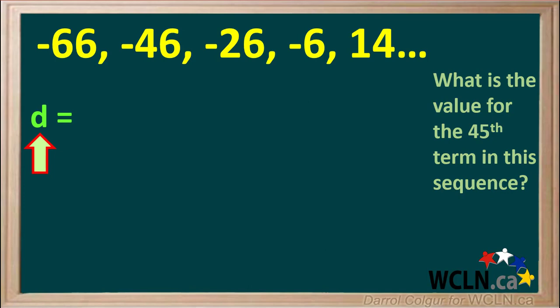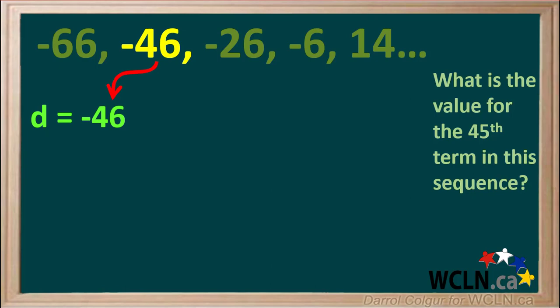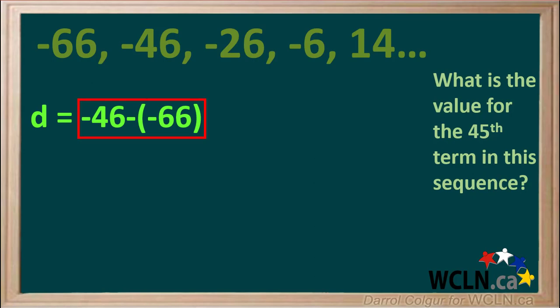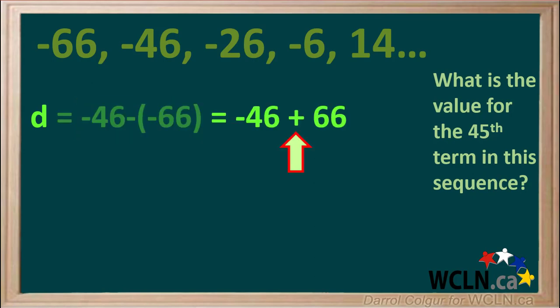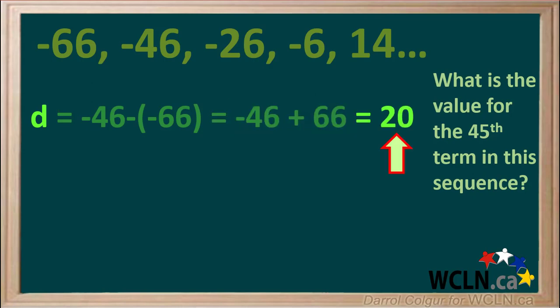We'll start by finding the value for the common difference d — it is the difference between consecutive terms. We'll use term 2 minus term 1. Term 2 is negative 46 and term 1 is negative 66. Negative 46 minus negative 66 is the same as negative 46 plus 66, which equals positive 20. So the value for d is 20.